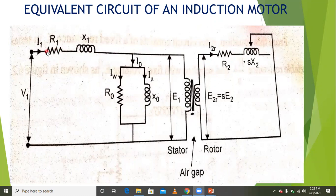In the equivalent circuit, R1 is the primary winding resistance, X1 is the primary winding leakage reactance, and there is a magnetizing component I-mu and a no-load component.